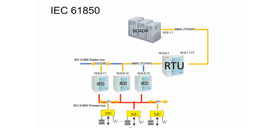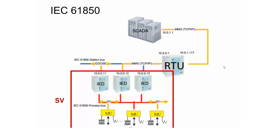To differentiate between these protocols — where they are used and how — we will look at this simple substation model. At the low level, we have the process bus, where we have measurement units and intelligent electronic devices, that is IEDs. The SV protocol is mainly used to send the sampled values from measurement units to IEDs, and if needed between the measurement units themselves. This protocol needs to be fast in order to send the correct data to the IEDs.